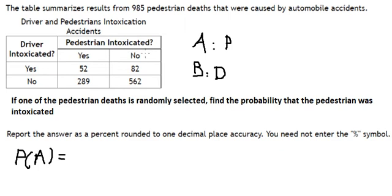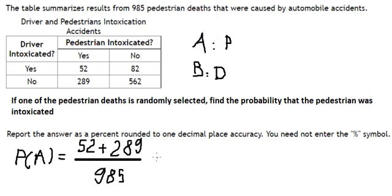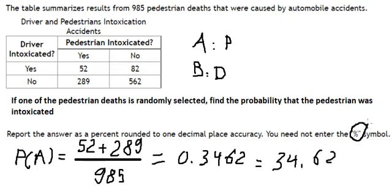So we choose yes, which gives us 52 and 289. We divide by the total of 985, and we get about 0.3462. That's about 34.62 percent. But the question doesn't ask for percentage, so when we put the answer we just write this number.